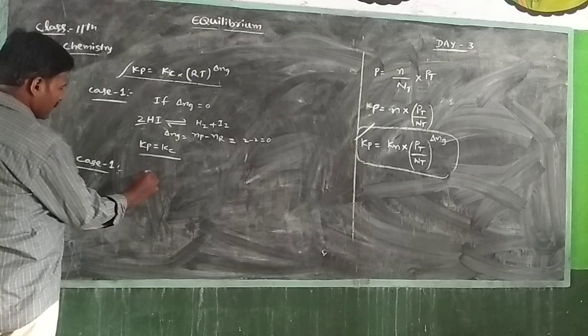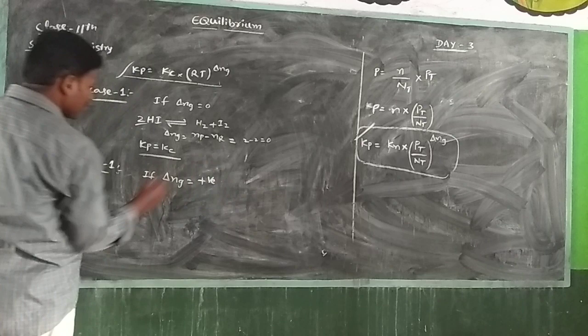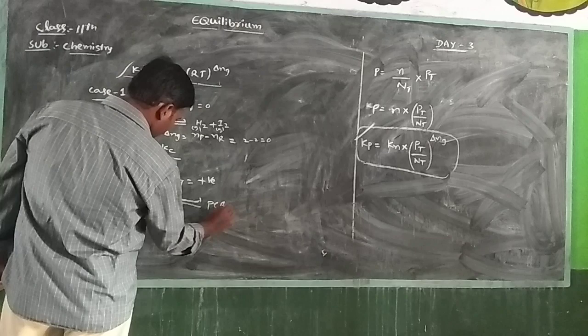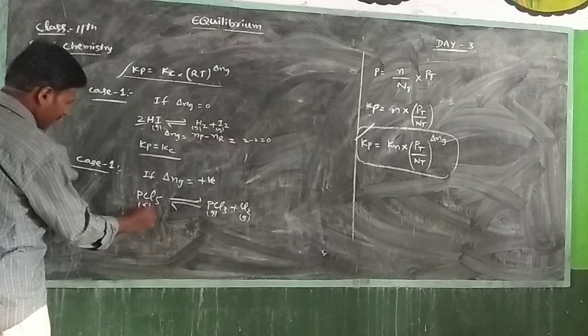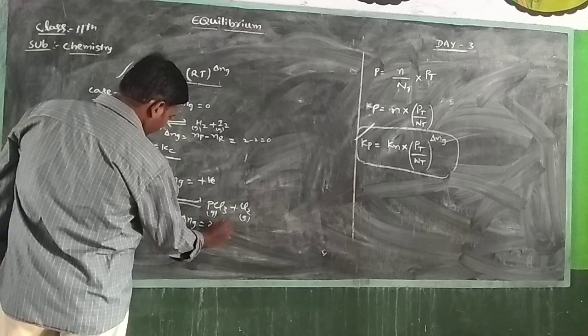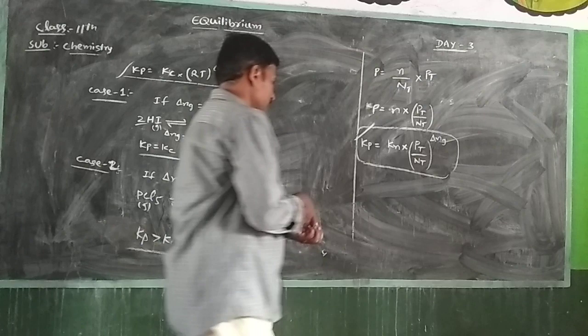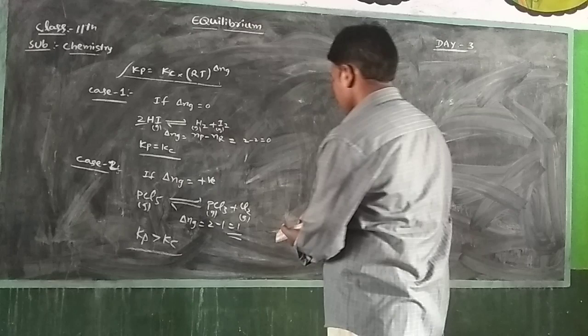Case 2: if ΔNg is positive. For example, PCl5 ⇌ PCl3 + Cl2. Here ΔNg equals 2 minus 1 equals 1, which is positive, so Kp is greater than Kc.